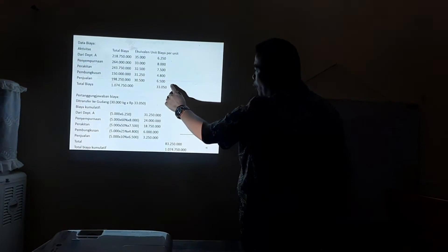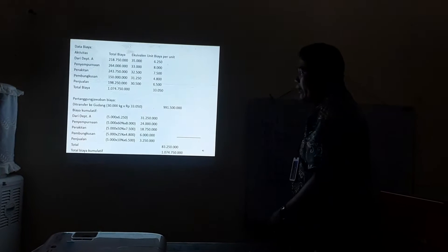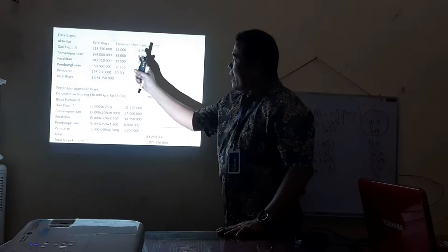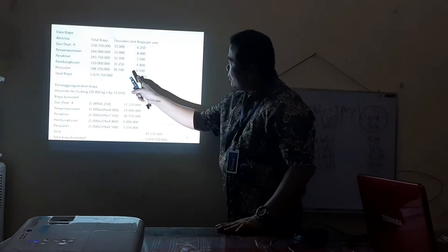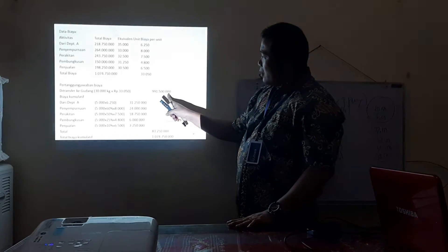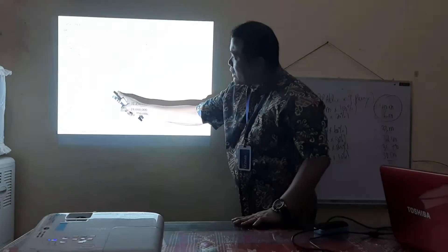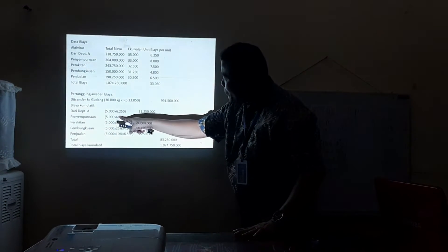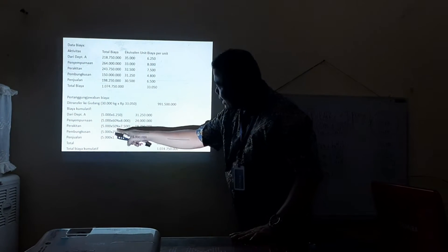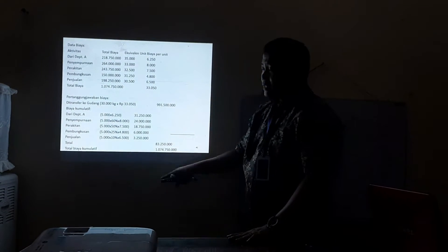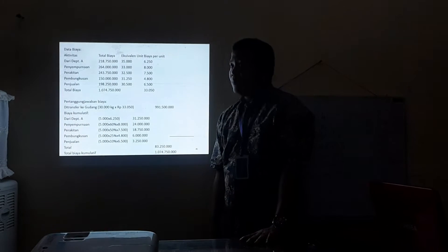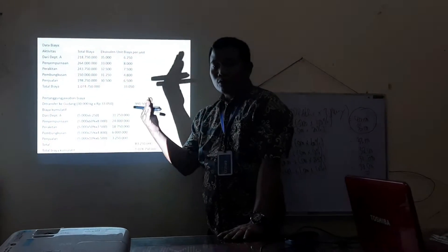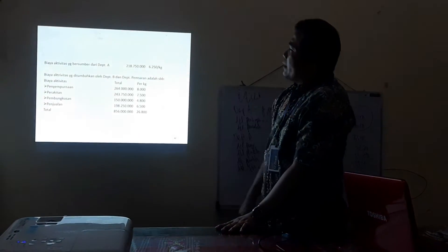Masukkan equivalent unit untuk penyempurnaan, perakitan, dan seterusnya, lalu bagi total biaya dengan equivalent unit. Maka diperoleh harga pokok produksi di Departemen B sebesar 33.050 per unit. Pertanggungjawaban: yang selesai ditransfer ke gudang 30.000 unit dikali 33.050. Harga pokok produk dalam proses juga dihitung sesuai tingkat penyelesaian. Ini sebenarnya hampir sama dengan akuntansi biaya, hanya bedanya di sini berdasarkan aktivitas, bukan sekadar bahan, tenaga kerja, dan overhead.